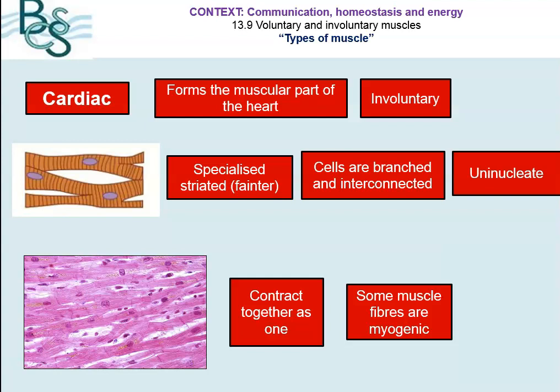The first one we're going to look at are cardiac muscles. Cardiac, as the name suggests, are found in the heart and they are involuntary muscles — you don't have to think about making your heart contract. If you look at the picture here, you can see that it has some very faint stripes on it. Stripes, in biology terms, are referred to as striations, so we refer to this as striated muscle. But it is specialised striated because it is found within the heart.